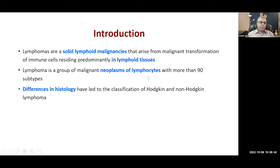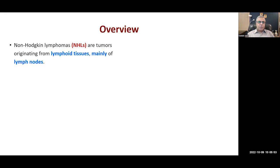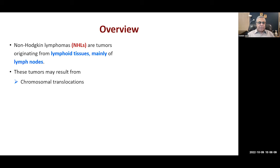It is basically lymphocytes, and differences in histology have led to the classification of Hodgkin and non-Hodgkin lymphoma, which we have already done in the previous lecture. Non-Hodgkin lymphomas are tumors originating from lymphoid tissue mainly in the lymph nodes, and these tumors result from chromosomal translocations, where one chromosome breaks and attaches to another chromosome, which I'll show in a schematic diagram.